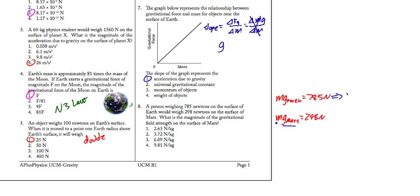This implies then that the mass of the object is 785 newtons over the acceleration due to gravity on Earth, 9.81 meters per second squared, or about 80 kilograms.